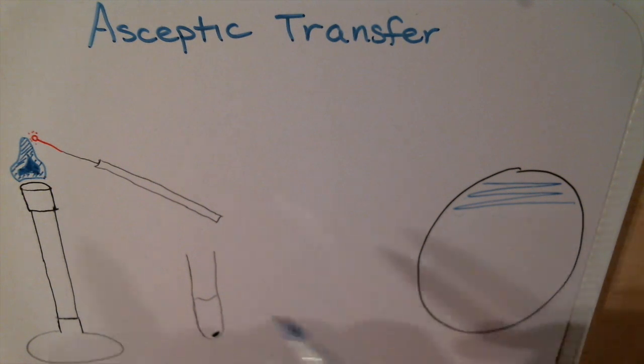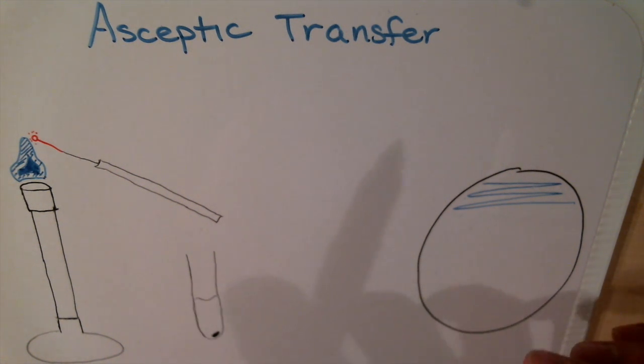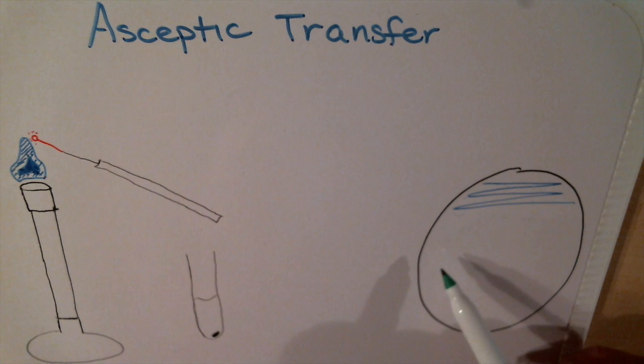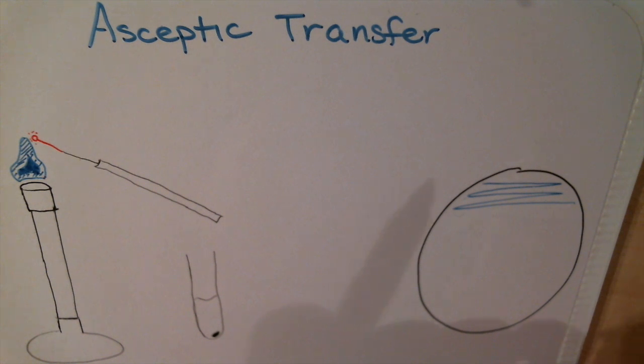Then we'll burn the bunsen burner again until it's bright red and wait for 10 to 15 seconds. If necessary, to make sure that the loop is cooled down, we'll lift the top up again and touch the plastic sides of the inner walls of the plate. If you hear a sizzling sound then it's still too hot. If you don't hear anything, then it's good to go.